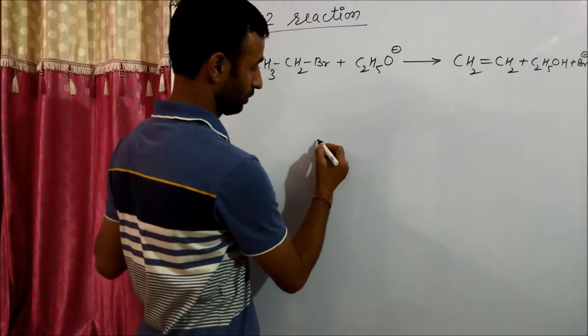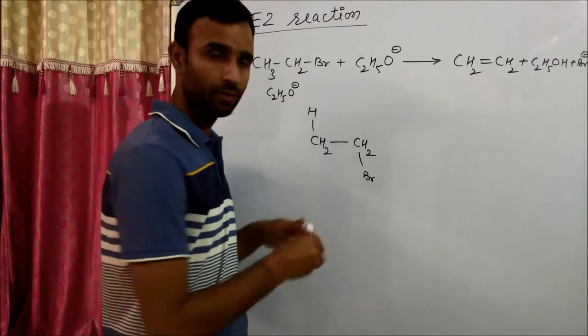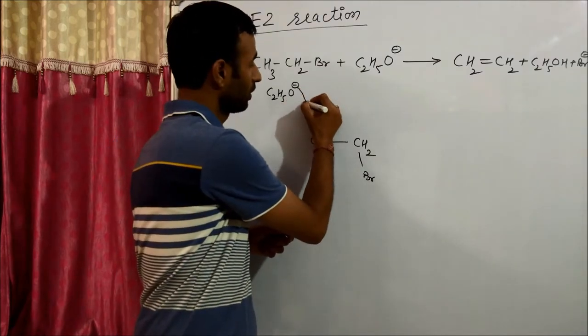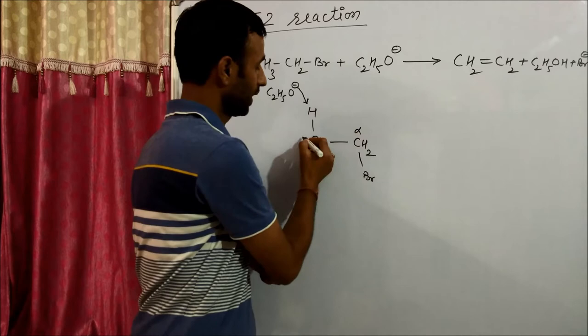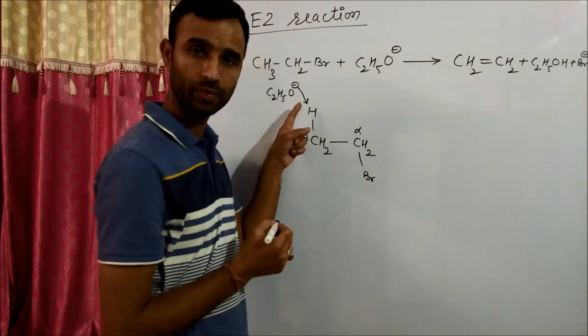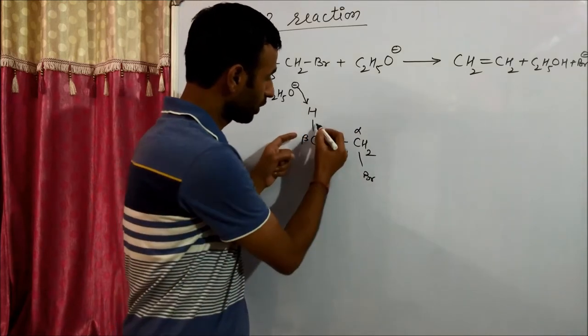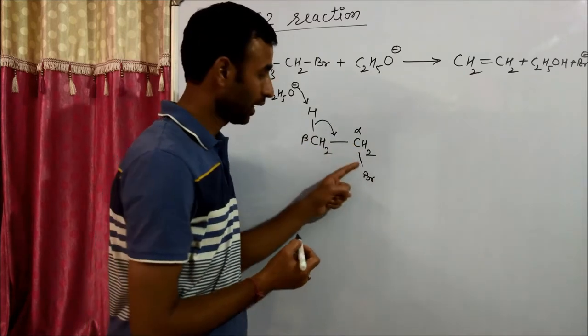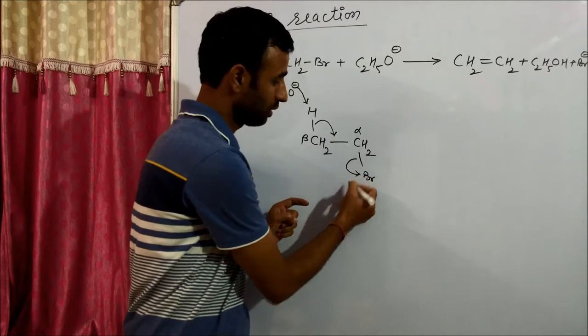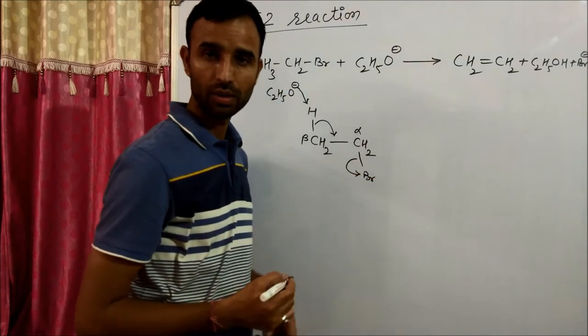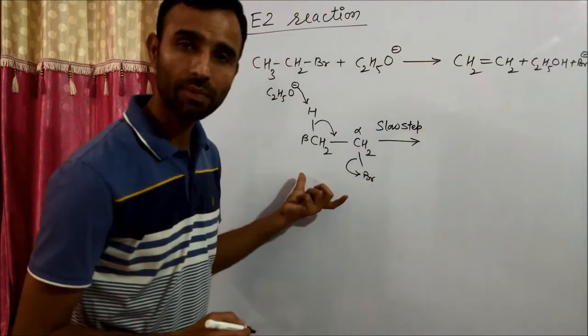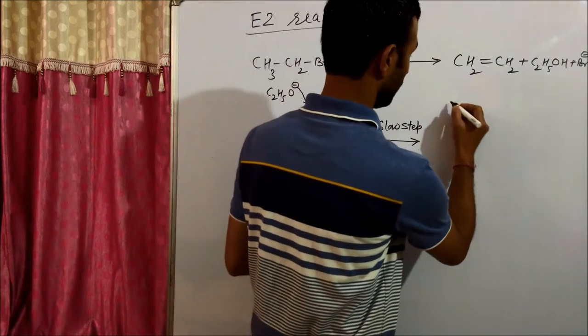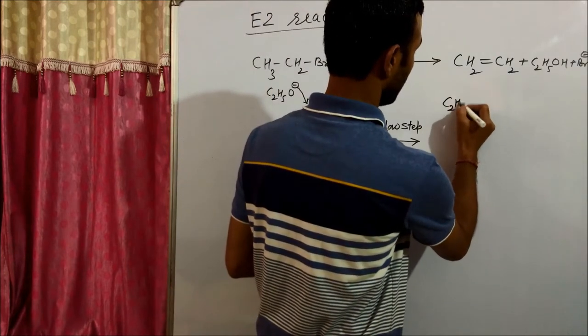In this reaction, ethoxide ion attacks on beta hydrogen. Electrons of C-H bond move towards C-C bond and this C-Br bond breaks. This is the slow step in which C2H5O becomes partial negative.